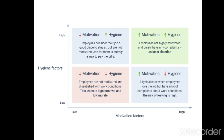Looking at this picture, you'll see that the bottom axis shows motivation factors — moving from left to right indicates low to high motivation factors. The left-hand axis shows hygiene factors, with lower values at the bottom and higher hygiene factors as you move upward.